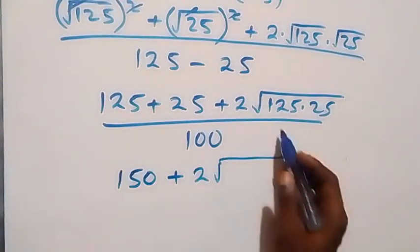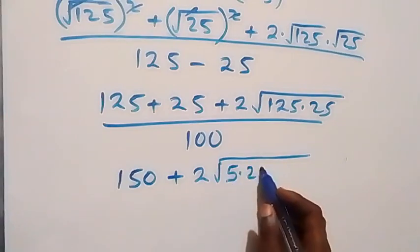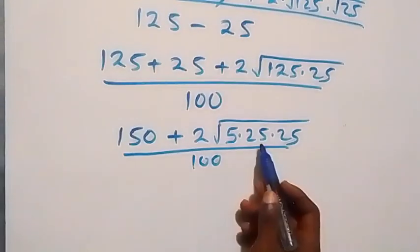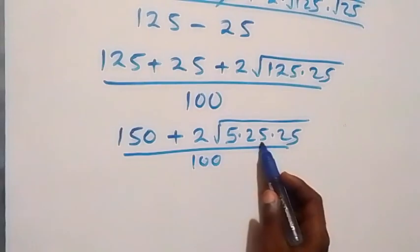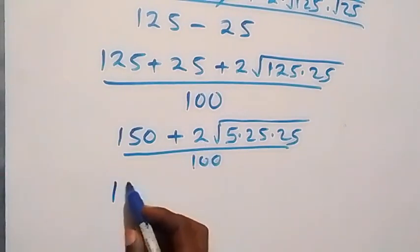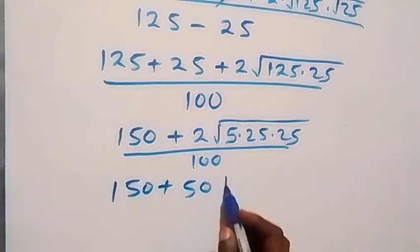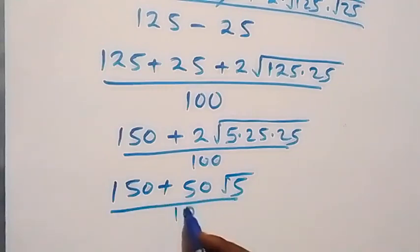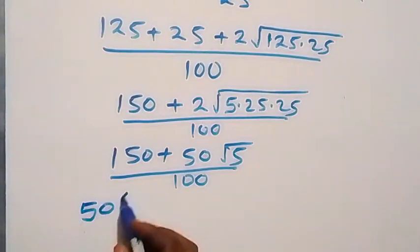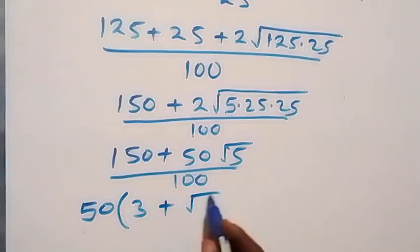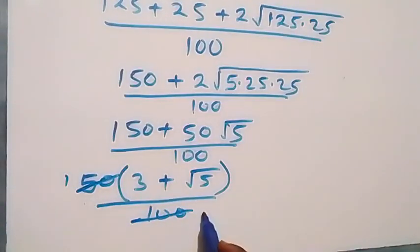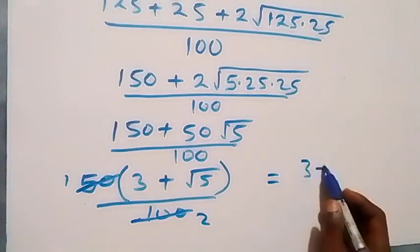From here, simplifying further: 125 plus 25 gives us 150, then plus 2 multiplied by the square root of 5 times 25 times 25, over 100. Here root of 25 times 25 gives us 25, so we have 25 times 2 which is 50. So we have 150 plus 50 root 5 over 100. From here we factor out 50 — 50 is common — so we have 50 times bracket 3 plus root 5, over 100, and 50 into 100 gives 2.